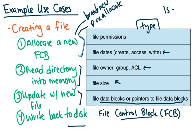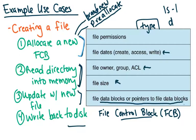If you do an ls -l, you'll actually see a 'd' at the front of all your folders, telling you that it's a directory. There are two ways to allocate a new file control block: you can create a brand new one, or use a pre-allocated one. Some OSes don't pre-allocate any file control blocks, while others pre-allocate N of them. Then the second thing you want to do is read the directory into memory — wherever this file is going, you need to read that directory in, update it, and then write it back to disk.